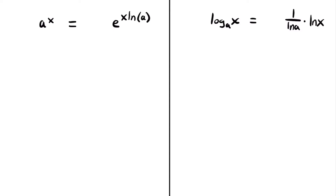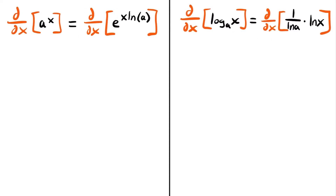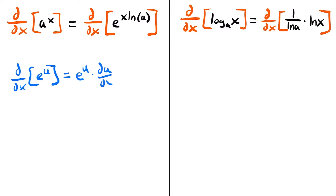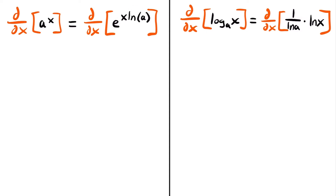Here are our definitions. To find the derivative of a to the power of x, or log base a of x, we take the derivative of both sides of these equations. Let's start with the derivative of a to the power of x. Remember: when you take d/dx of e to the power of some function u, that equals e to the power of u times the derivative of u. Using that here, where u equals x times the natural log of a, we first rewrite the function as e to the power of x times the natural log of a, then multiply by the derivative of that exponent.